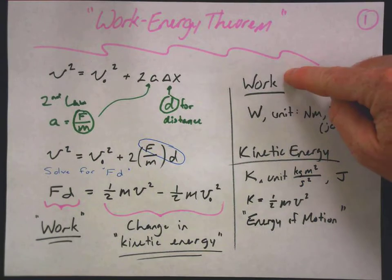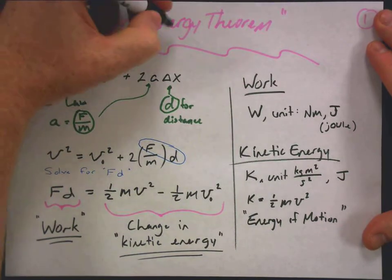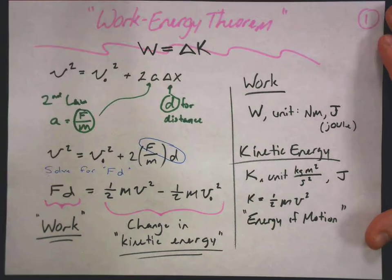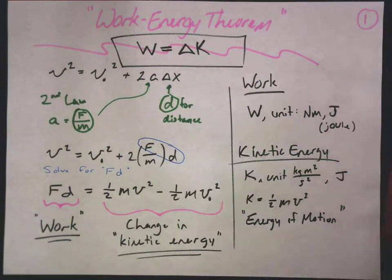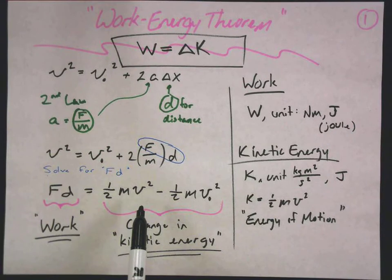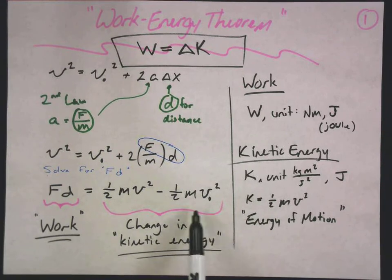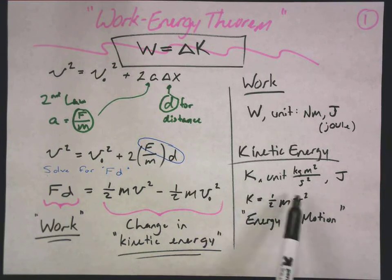If we do work on an object by applying a force while it moves a certain distance, we have changed the kinetic energy of that object. The work-energy theorem states: work equals the change in kinetic energy. Kinetic energy itself can never be negative, but the change in kinetic energy can be negative — for example, if an object starts with some velocity and ends at rest, the change goes from some positive value to zero, giving a negative change.